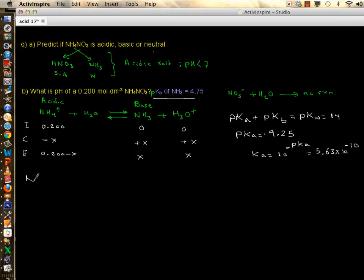We write the Ka expression, which is equal to 5.63 times 10 to minus 10 equals products x times x, x squared, divided by 0.2 take away x. Now we are going to have our assumption, not going to solve it quadratically. Since Ka is much smaller than 1, we can say that 0.2 take away x is equal to 0.2, approximately.